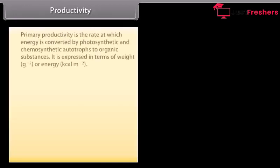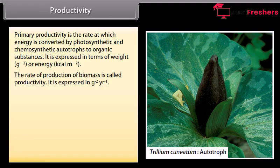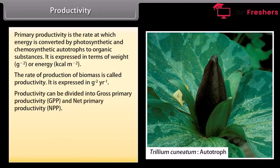Productivity. Primary productivity is the rate at which energy is converted by photosynthetic and chemosynthetic autotrophs to organic substances. It is expressed in terms of weight per gram square or energy kilocalorie per meter square. The rate of production of biomass is called productivity.